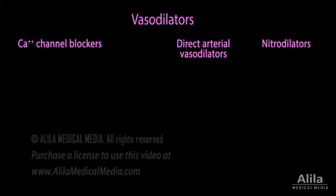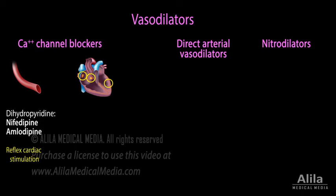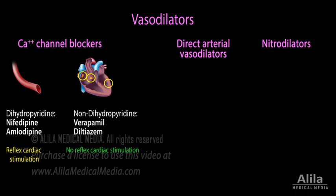Vasodilators include calcium channel blockers, direct arterial vasodilators, and nitrodilators. Calcium channel blockers inhibit L-type calcium channels that are responsible for smooth muscle contraction, cardiac myocyte contraction, and action potential generation in cardiac nodal tissue. The dihydropyridine class acts on peripheral blood vessels and are powerful vasodilators, but their action can lead to reflex tachycardia and increased cardiac contractility. Non-dihydropyridine agents, on the other hand, primarily act to decrease heart rate, contractility, and cardiac conduction speed, and are less effective on peripheral vessels. By having a cardiac depressant effect, they can reduce blood pressure without producing reflex cardiac stimulation. However, they should not be used for patients with systolic heart failure.